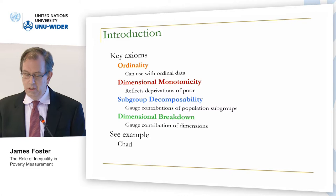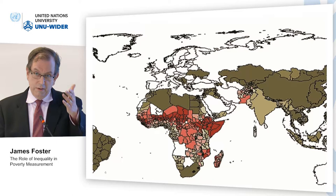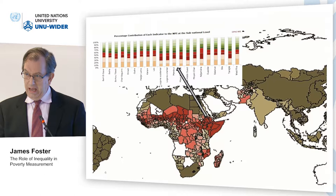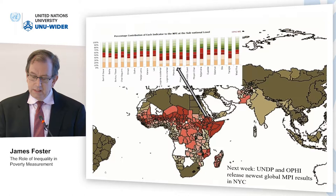With this toolkit, you can take a picture constructed by Sabina and the folks at OPHI for Africa, look at Chad, look at each particular area, and see how it stacks up for each dimension. Next week there'll be a release of the new multidimensional poverty index — the global MPI results — in New York City.